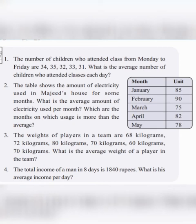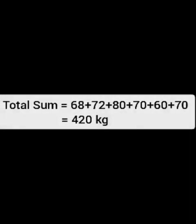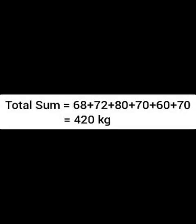We have to apply the same formula. We find the total sum — we add all the weights: 68 plus 72 plus 80 plus 70 plus 60, and we get 420. The average weight of a player is 70 kg.